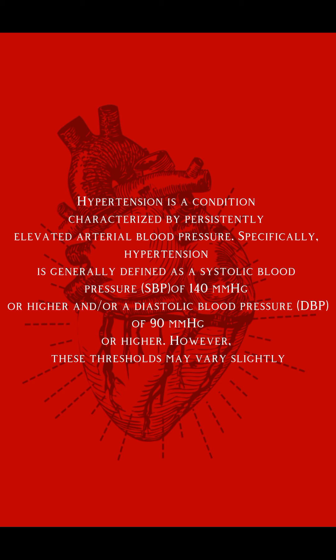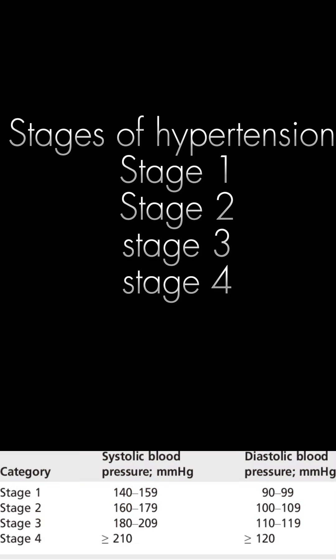Hypertension is generally defined as a systolic blood pressure (SBP) of 140 mmHg or higher, and/or a diastolic blood pressure (DBP) of 90 mmHg or higher. However, these thresholds may vary slightly.